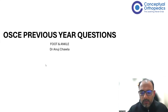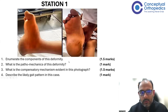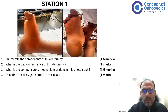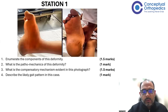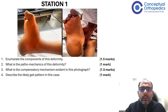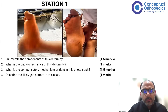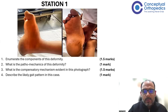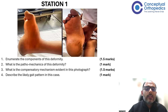So we're going to present some questions. This is the first question. There's a clinical picture. The questions are: enumerate the components of this deformity, what is the pathomechanics of this deformity, what is the compensatory mechanism evident in this photograph, and describe the likely gait pattern in this case.